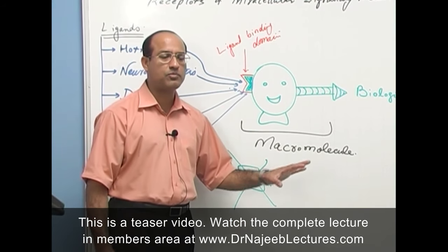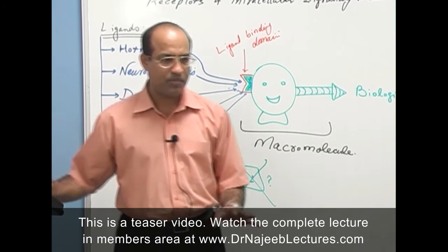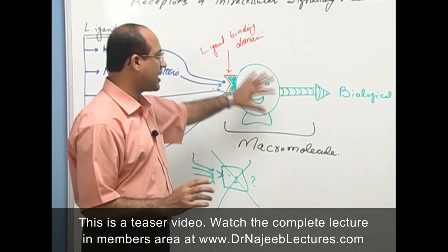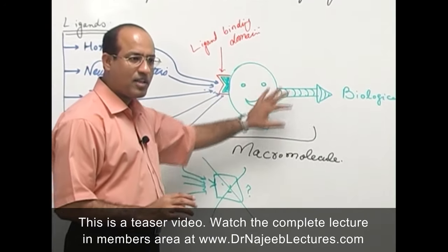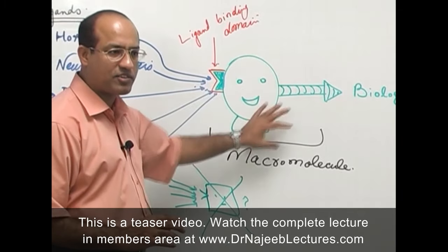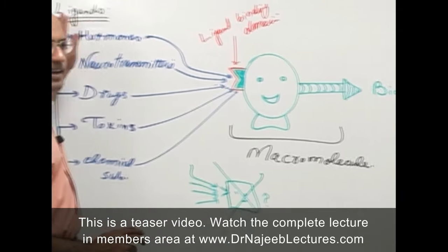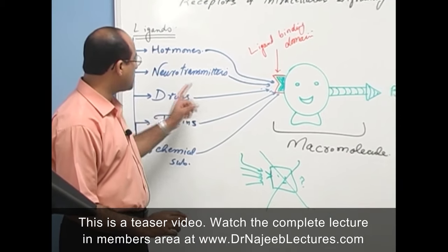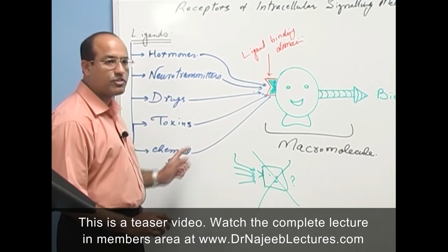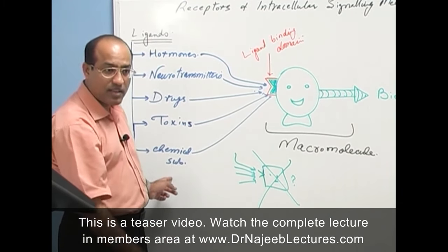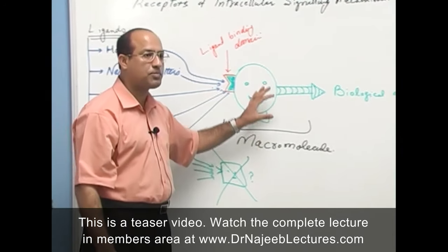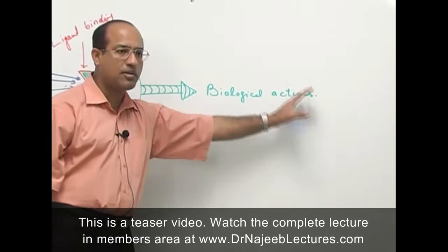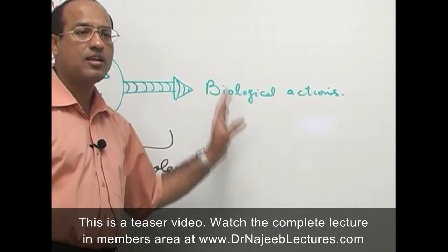Let's recap. A receptor is a macromolecule in a biological system to which a certain ligand binds. The ligand may be a hormone, neurotransmitter, drug, toxin, or other chemical substance. Once the ligand binds with a specific receptor, that results in some biological modifications in the organism.